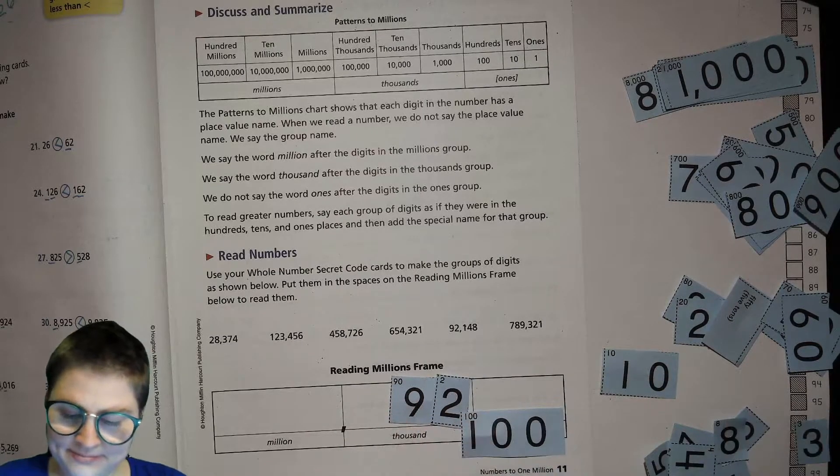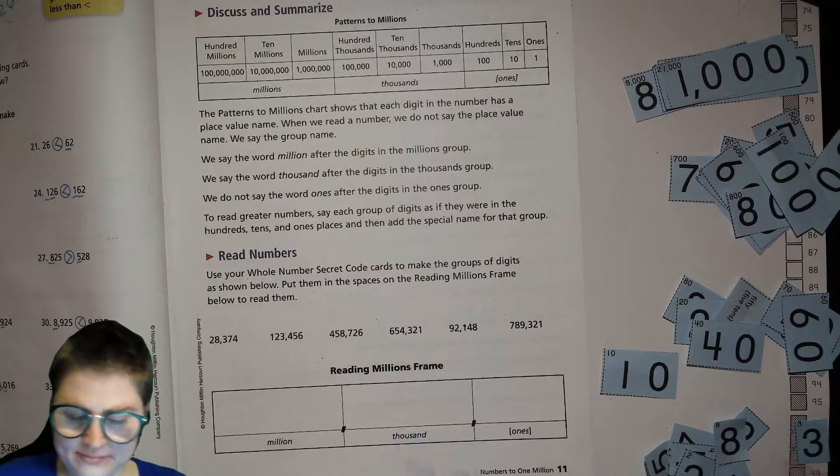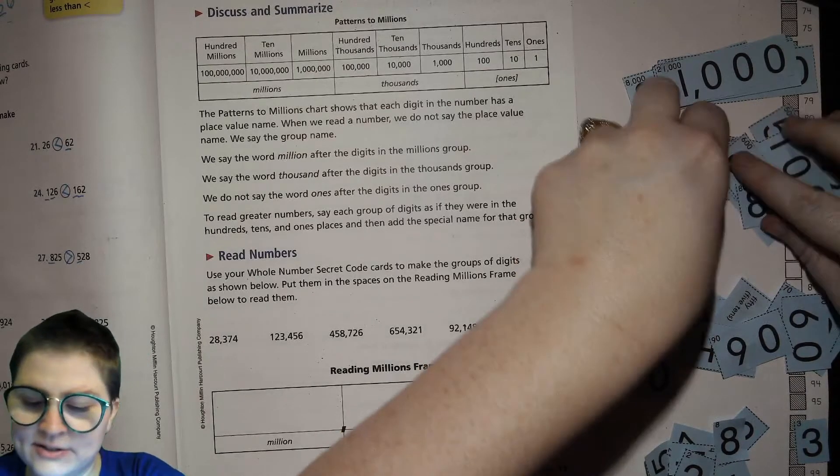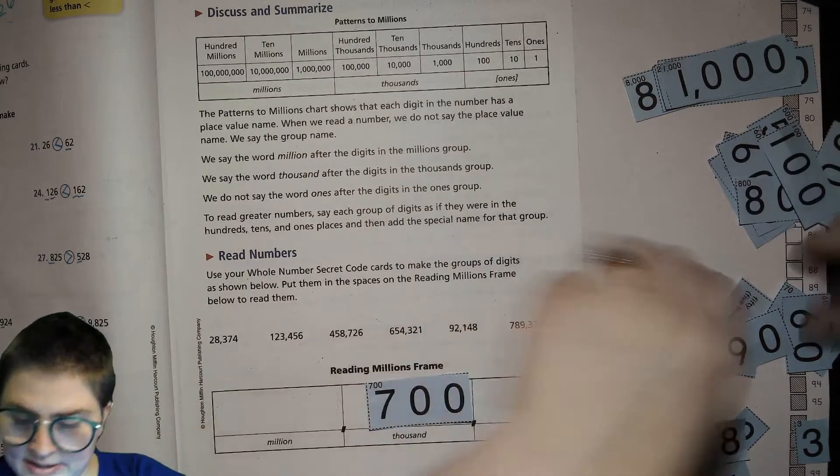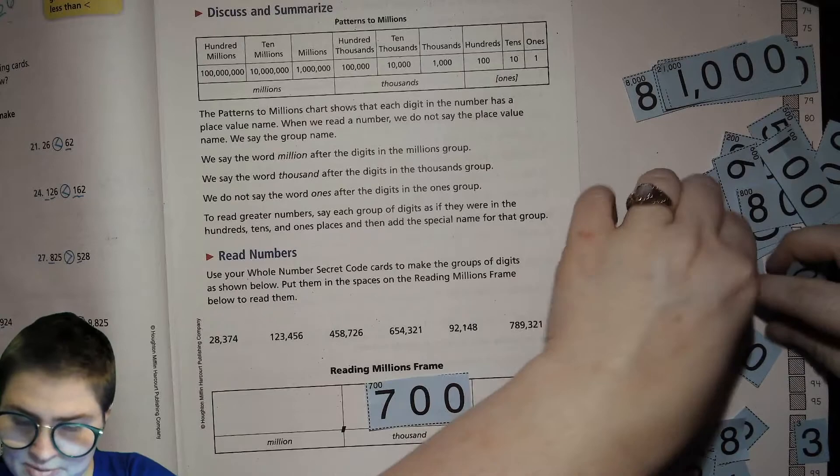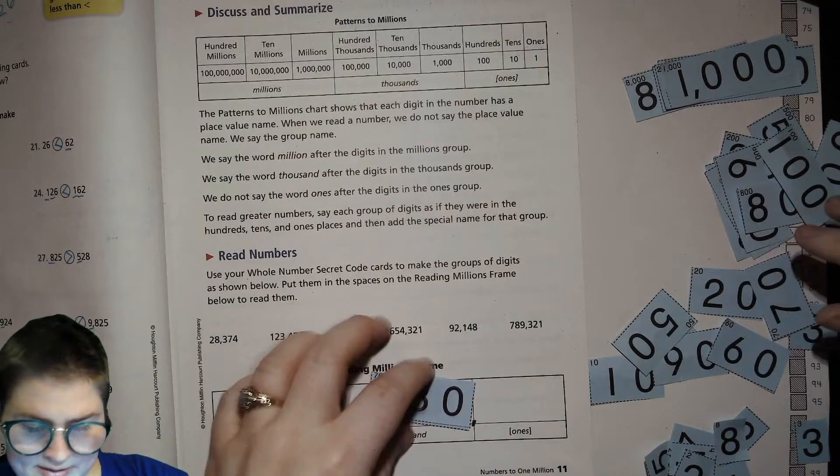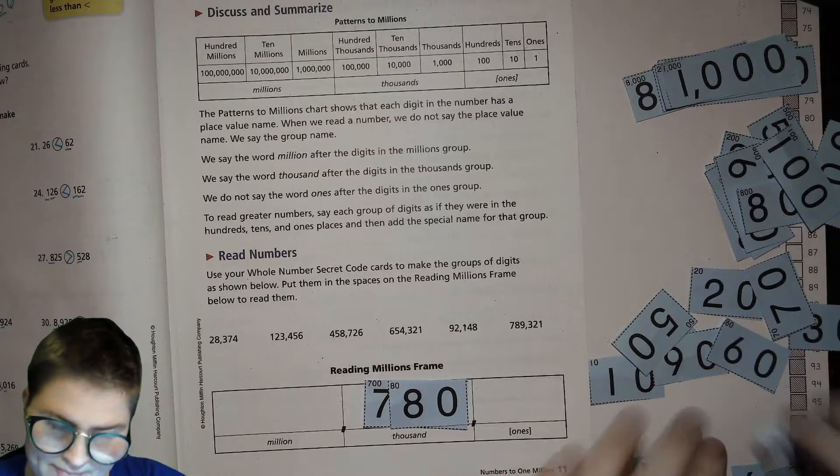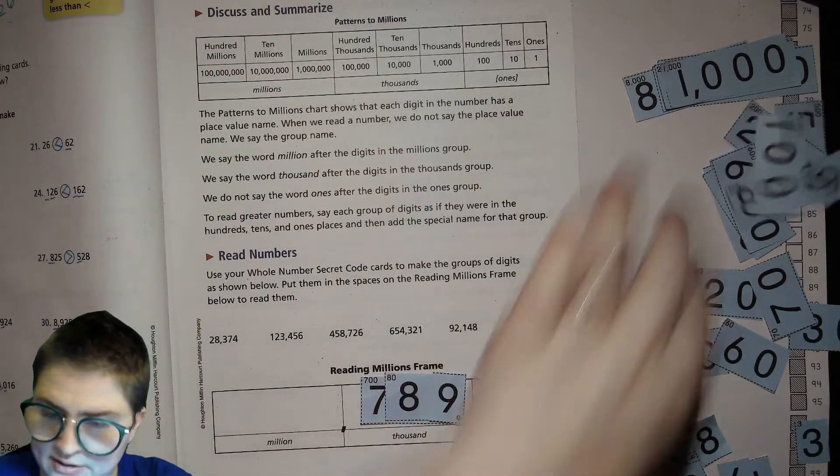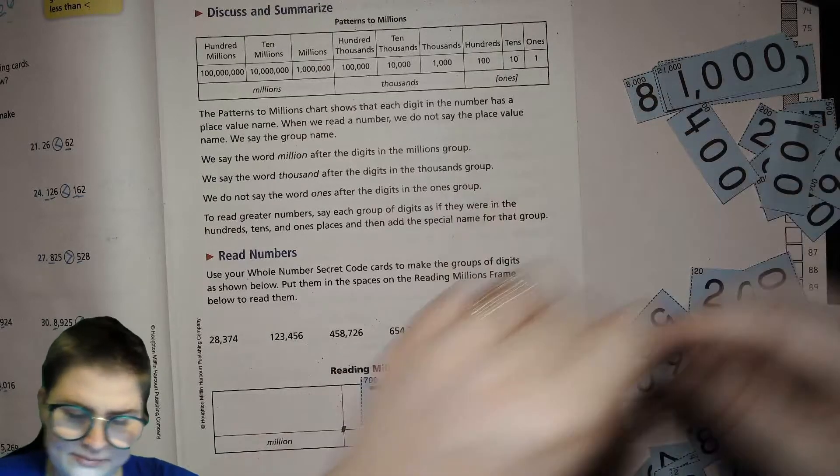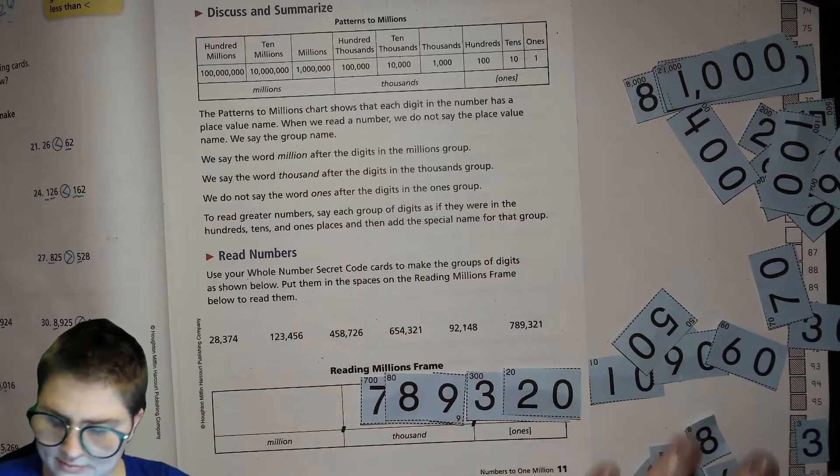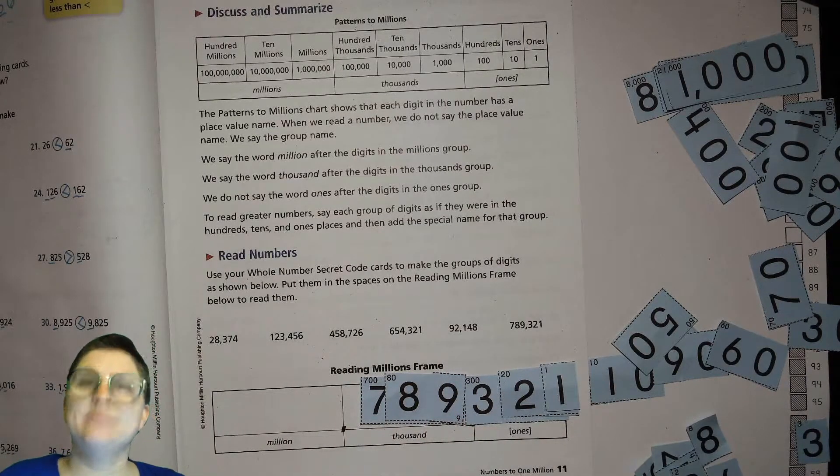Last one for this page right here. 789,000, so 780, 889,000, 300, 20, 1.